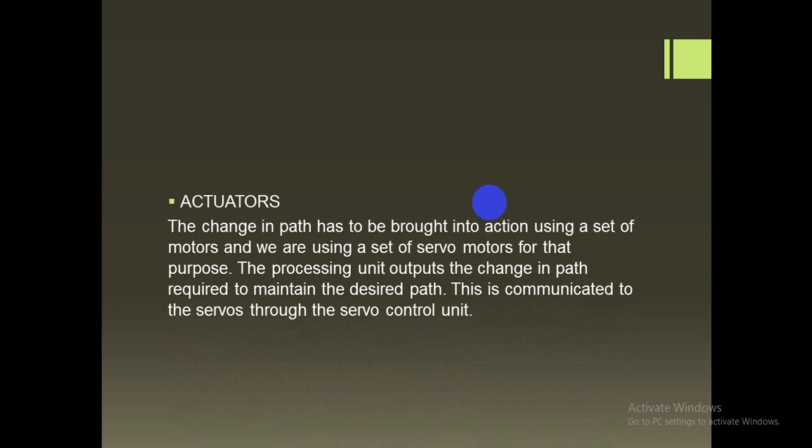The actuator carries out the change in path using a set of servo motors for that purpose. The processor unit outputs the required change in path to maintain the correct route. This is communicated to the servo control unit, which is essentially the output — controlling up and down as well as left and right, and the tilt via servo control, guiding the plane to its destination.